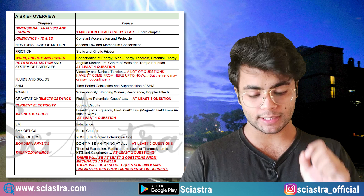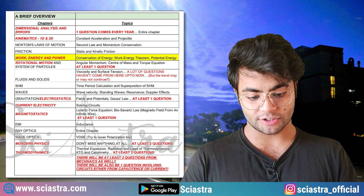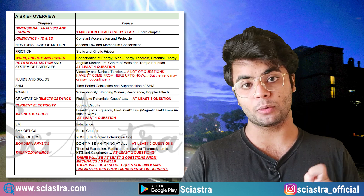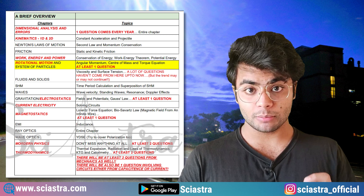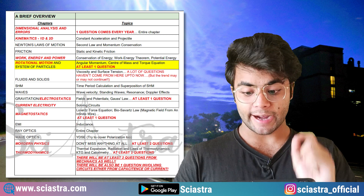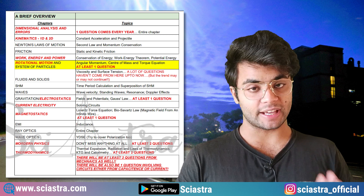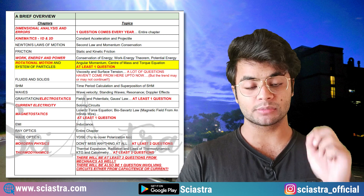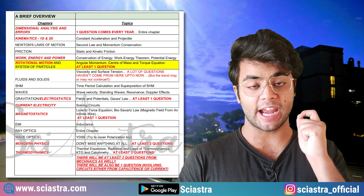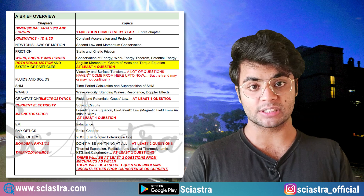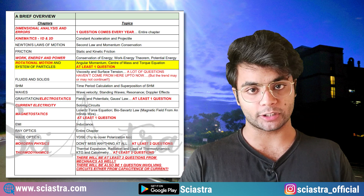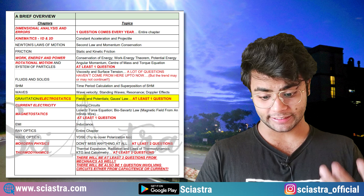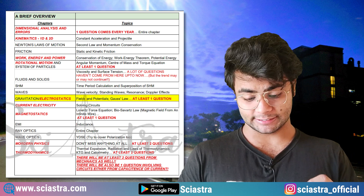Work, energy and power is a very very important chapter. The important topics are conservation of energy, work-energy theorem, and potential energy. Then comes rotational motion — at least one question is guaranteed — from angular momentum, center of mass, and torque equation, which are the important topics.